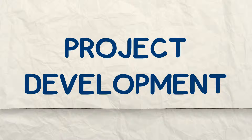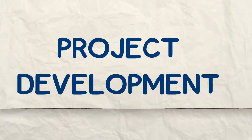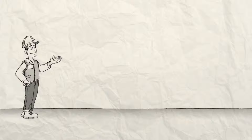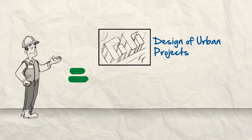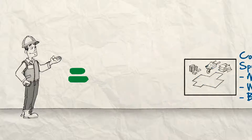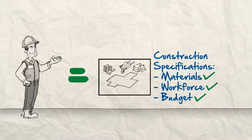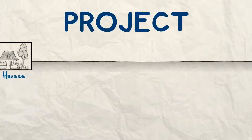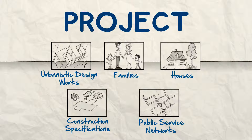Now let's get to the development of the project. First, you contract urban work designers, public service networks, and obviously the design of the houses, including the specifications for construction. Now the project has shape.